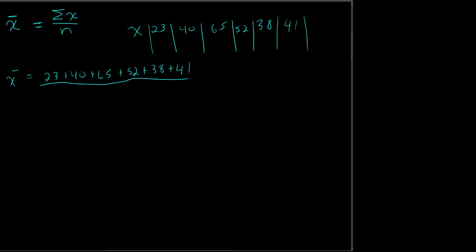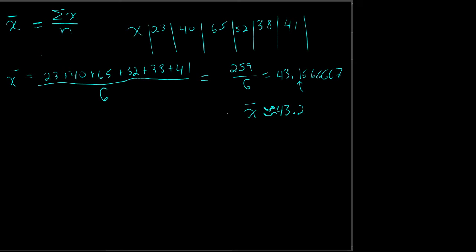Whatever the answer is, I'm going to divide it by the number of them: 1, 2, 3, 4, 5, 6. So I go running to my calculator — that was 259 divided by 6. Calculator is your friend. When I do the division I get 43.1666...7 towards the end, because it's a repeating decimal. I'll round it to one decimal place, which is 43.2, and because I rounded I'm going to use my approximately equal sign. So my mean is approximately 43.2.